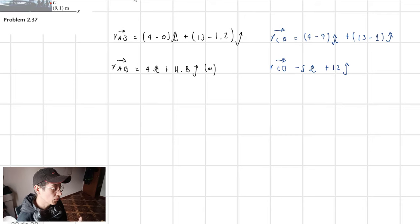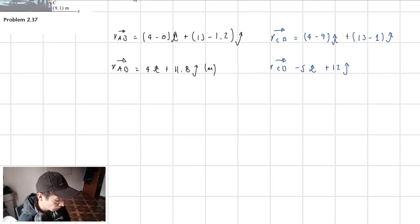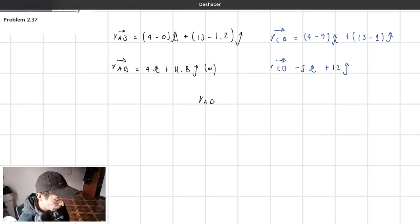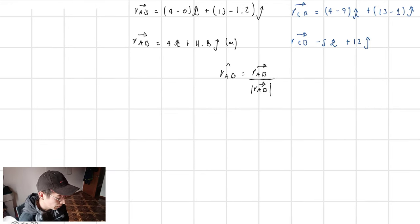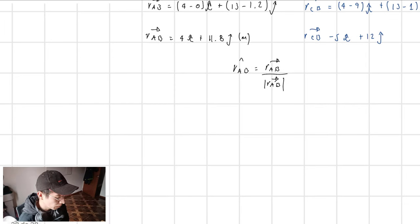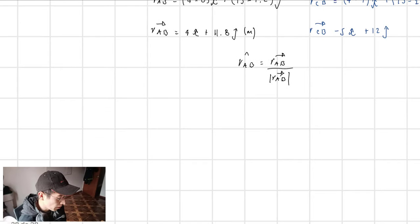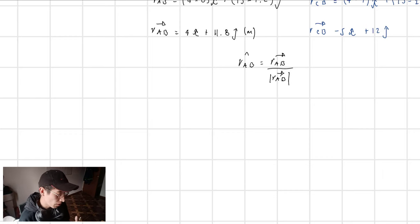All we have to do is use an equation to determine the unit vectors for each vector. The unit vector R_AB is equal to the vector divided by the magnitude of the vector. All I have to do is first determine the magnitude of the vector, and after that divide the vector by the magnitude.